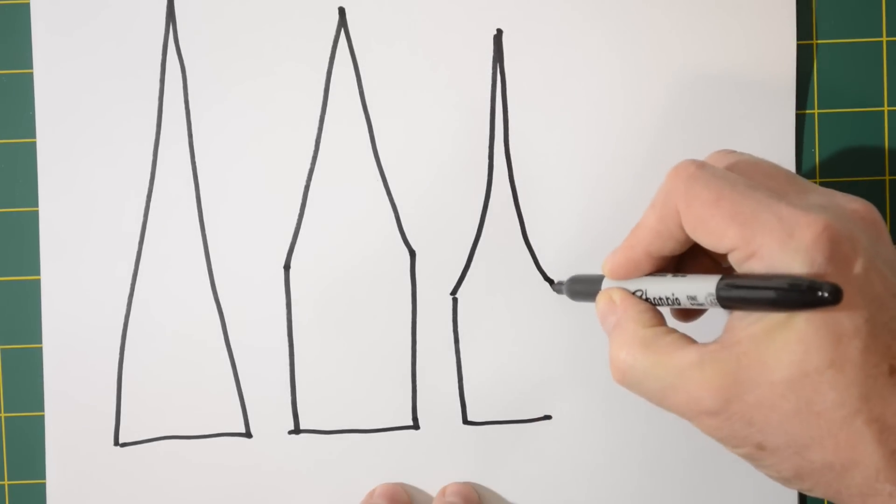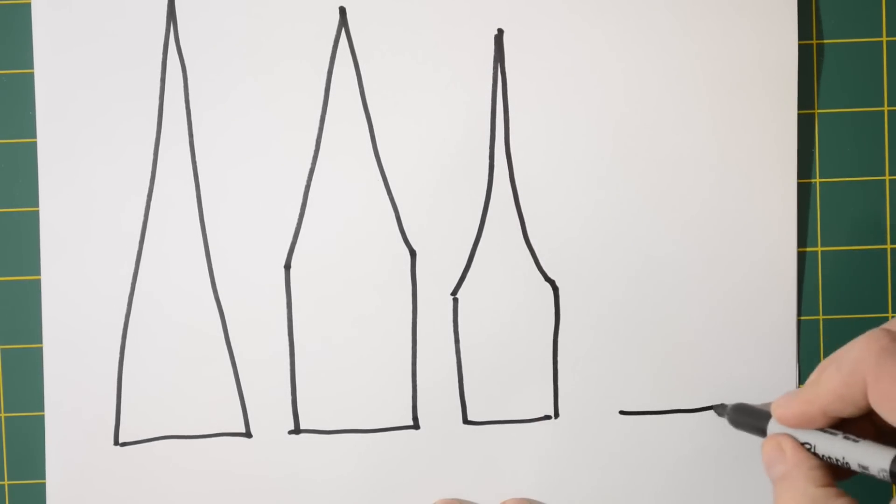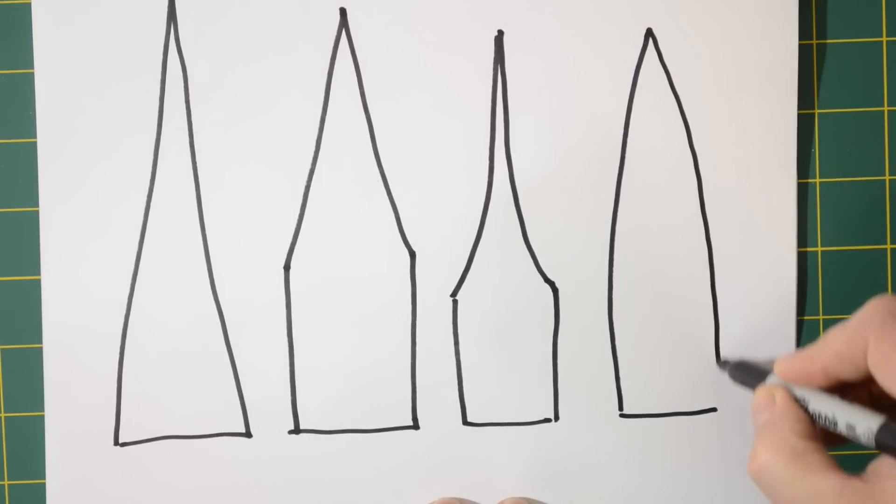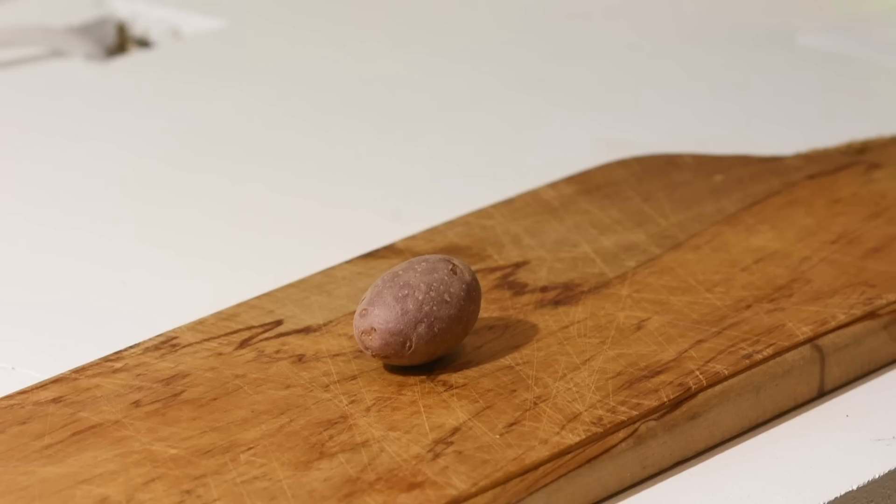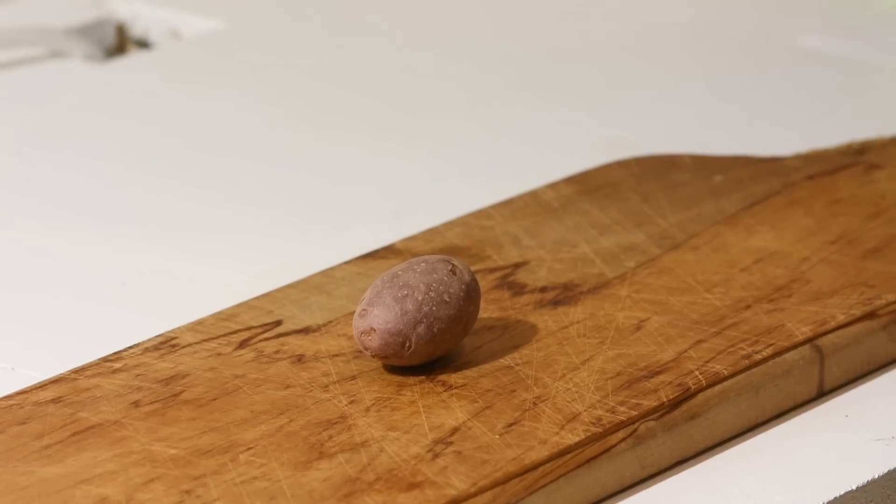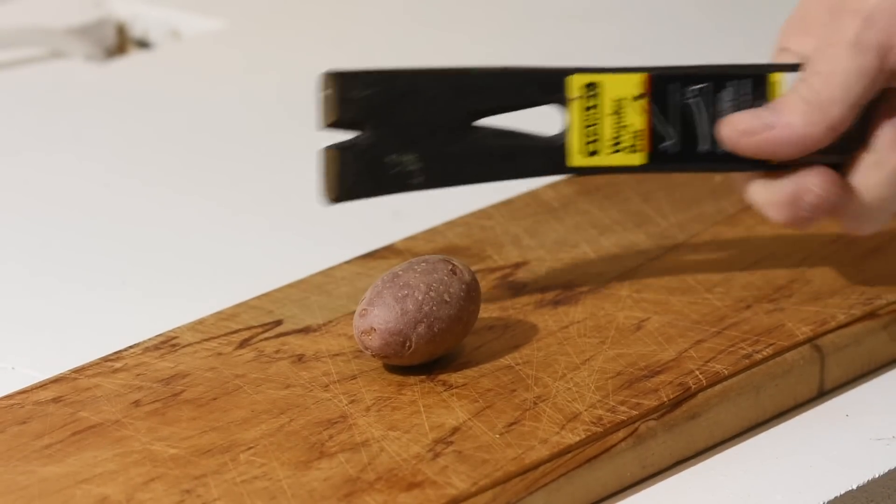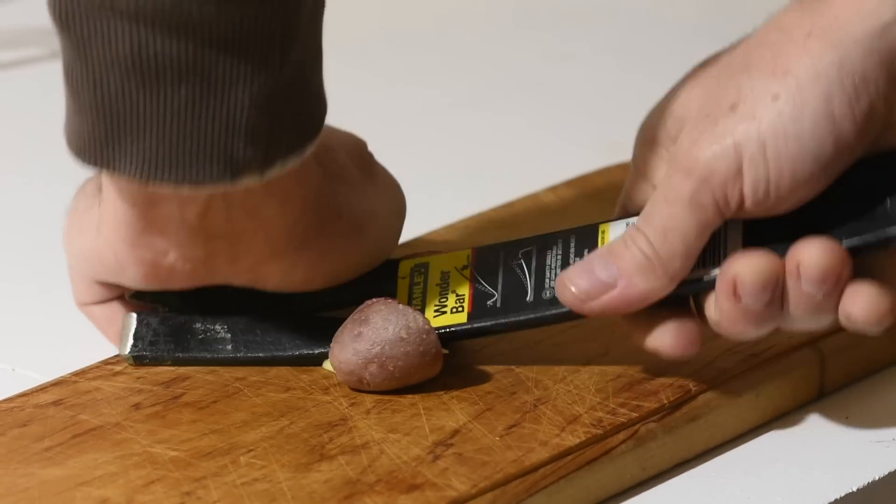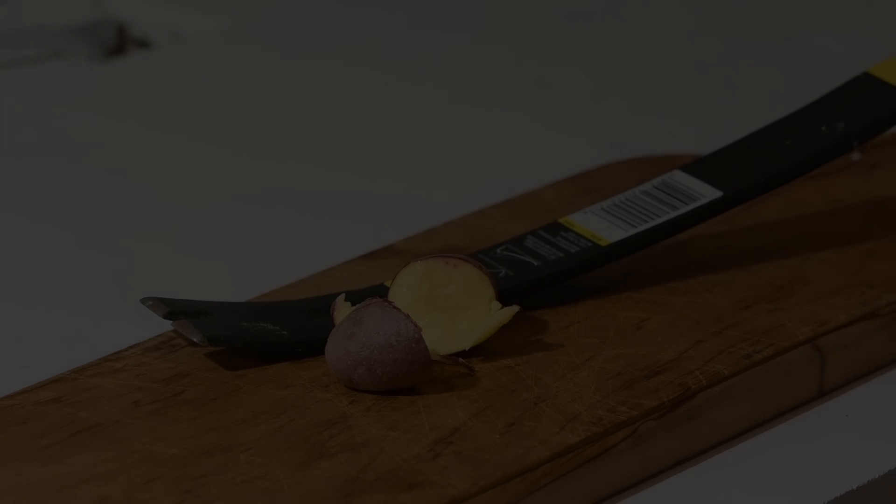Intuitively, we can figure that if this edge is really fat, it'll smash more than it will part. So let's cut a potato. We'll start by cutting it with this handy tool. Hmm, not so great.